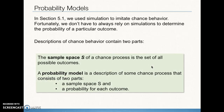Sample space represents all of the different possible outcomes that can occur from a chance process. For example, if we flip a coin, we know one of two things is going to happen: either heads is going to land face up, or tails is going to land face up. In our sample space — and we do use set notation for this — we're going to have two things: heads and tails.